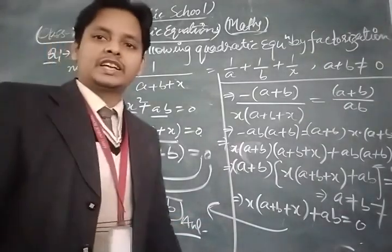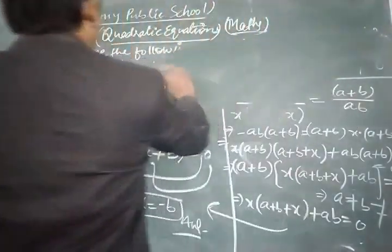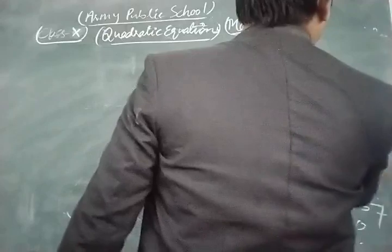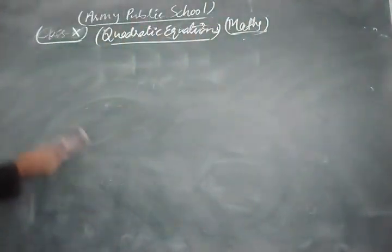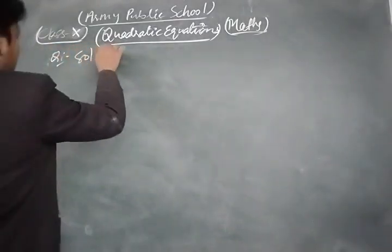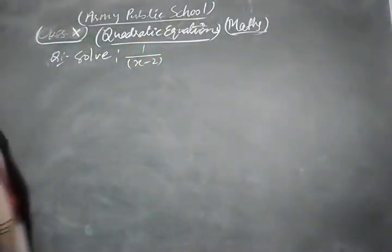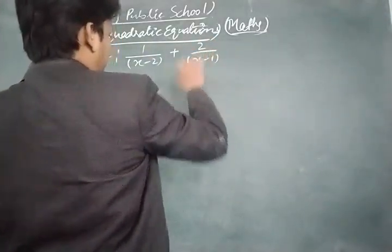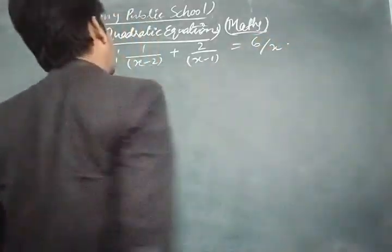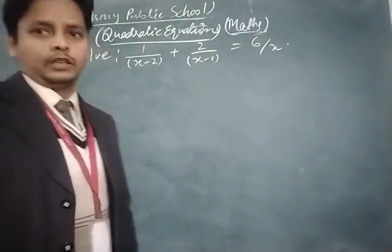In this way you can solve each and every question of your NCERT exercise on this topic. Now let's take and solve another important question. We have: solve 1/(x − 2) + 2/(x − 1) = 6/x. Let's see its solution.